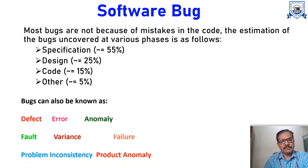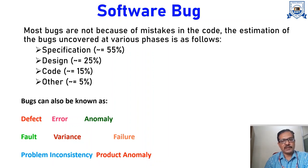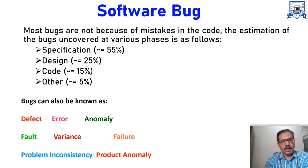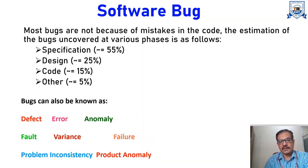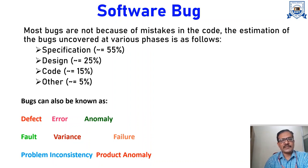Bugs can also be known as defect, error, anomaly, fault, variance, failure, problem, inconsistency, and product anomaly. These are synonyms of bugs — it may be called a defect, an error, an anomaly, or a failure. There are many names given, but the generic or common term for all of these is bug.